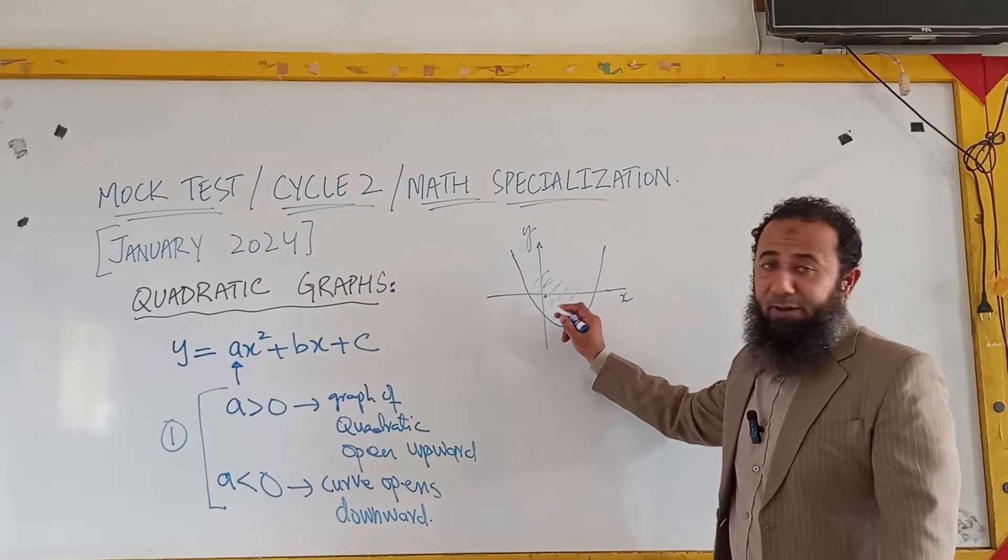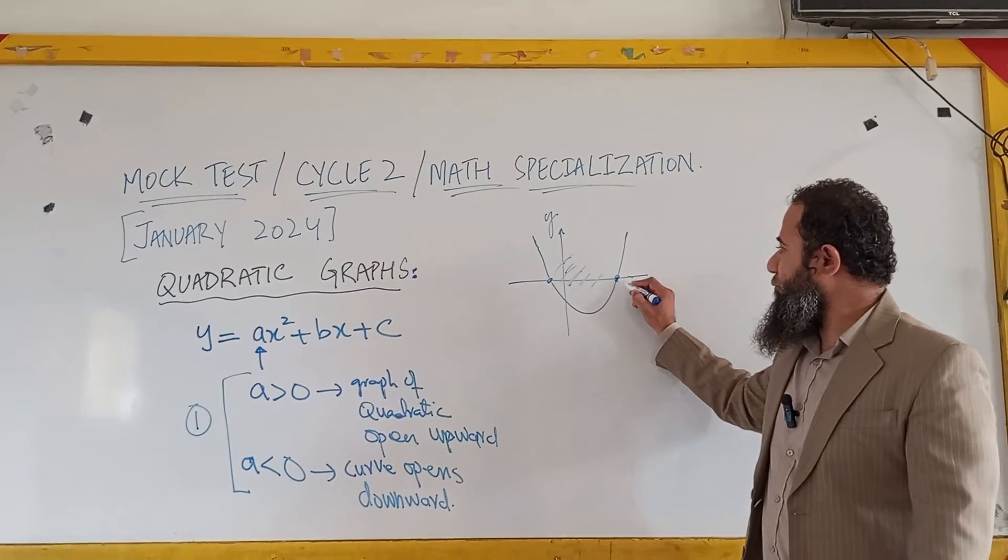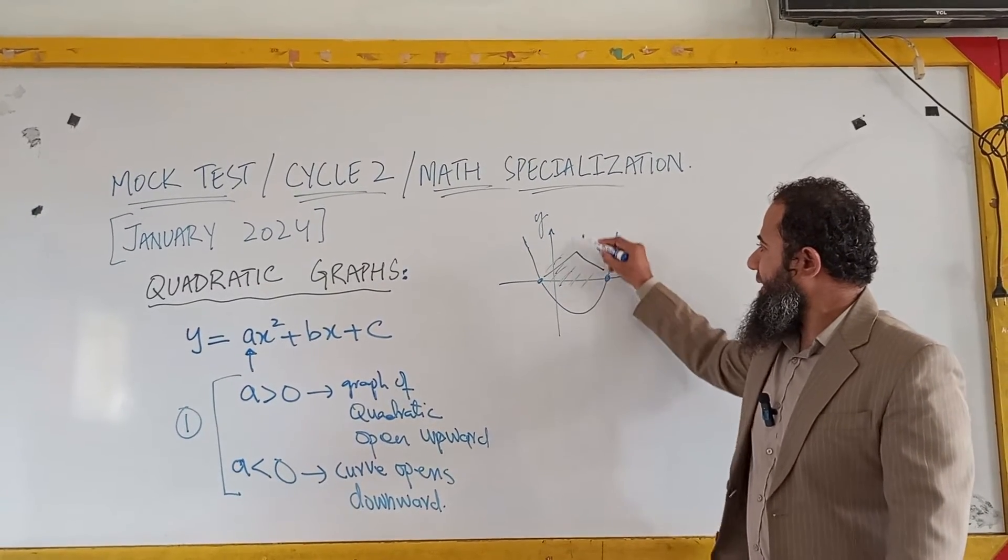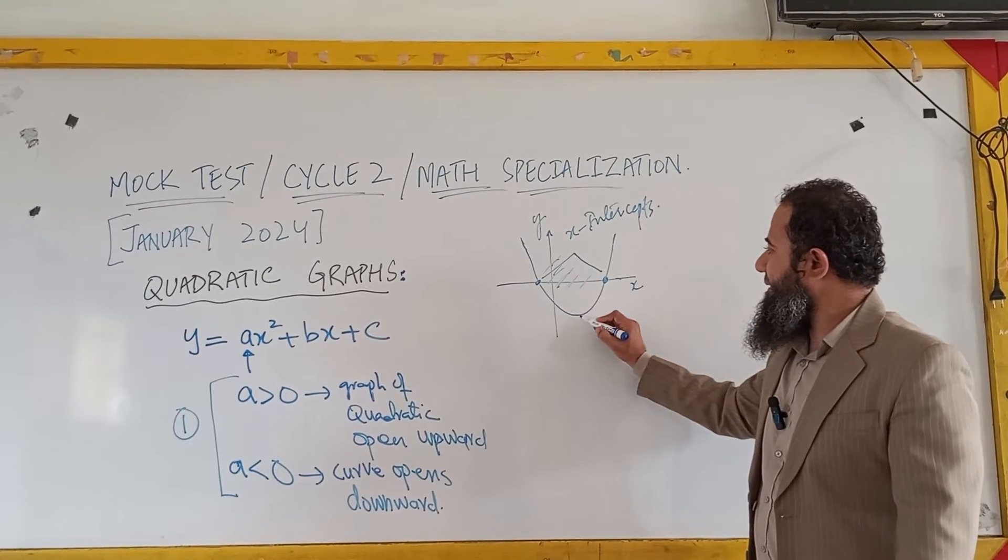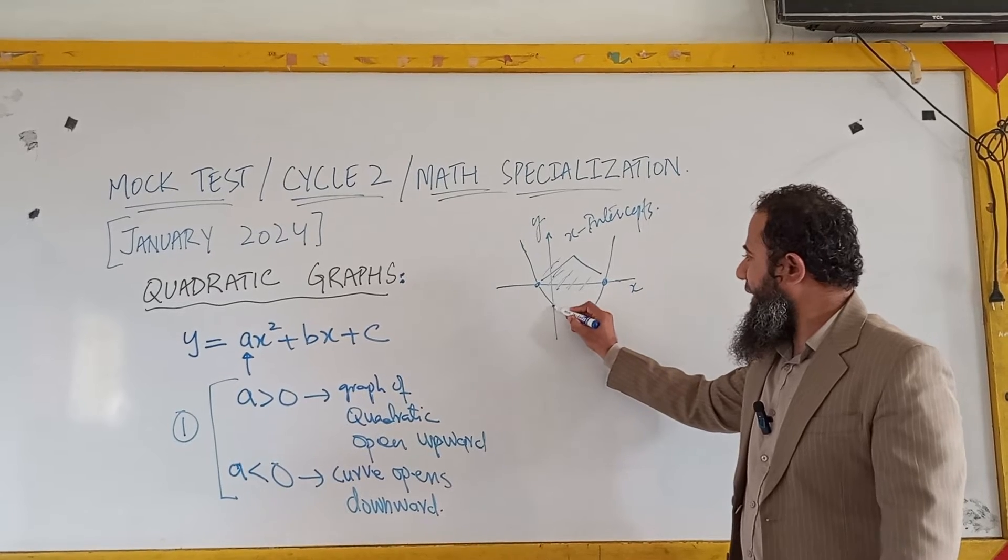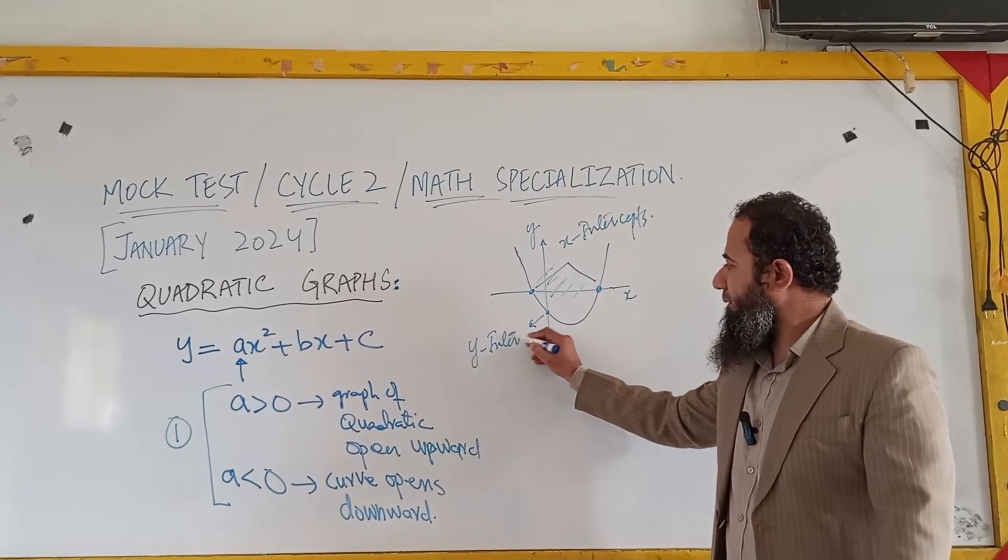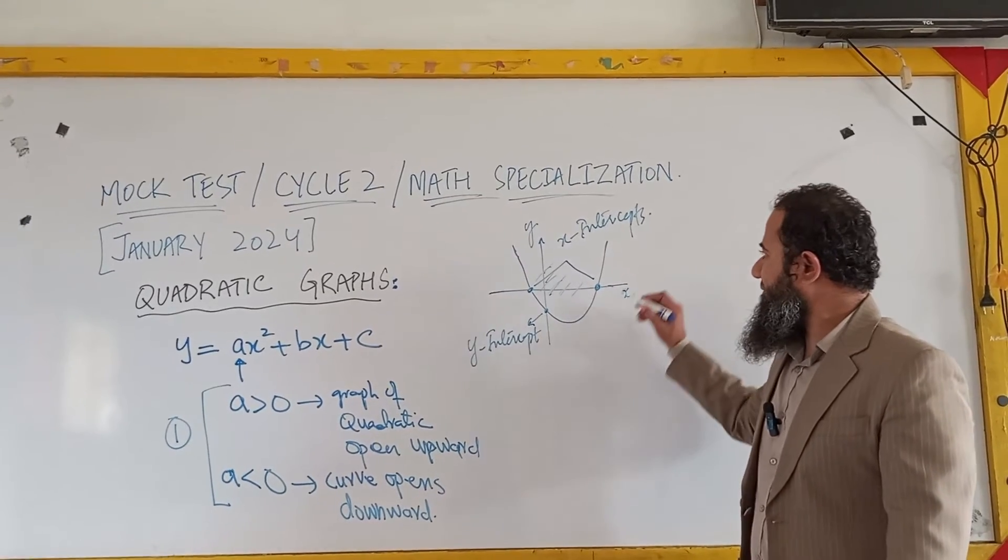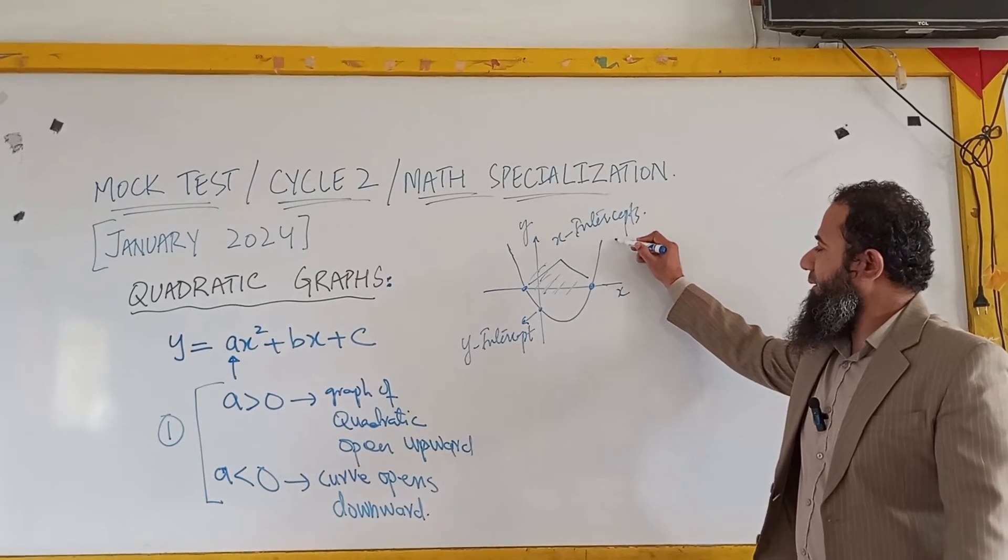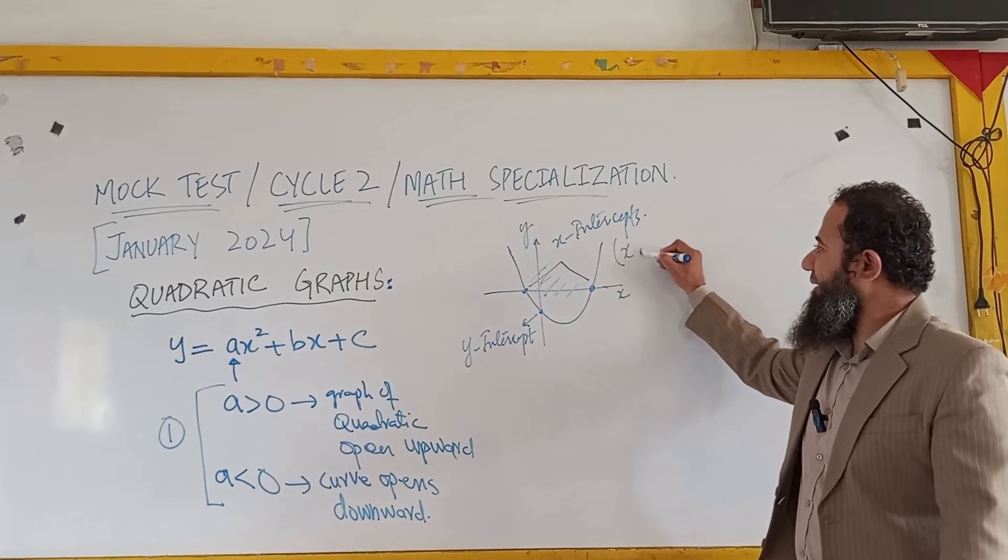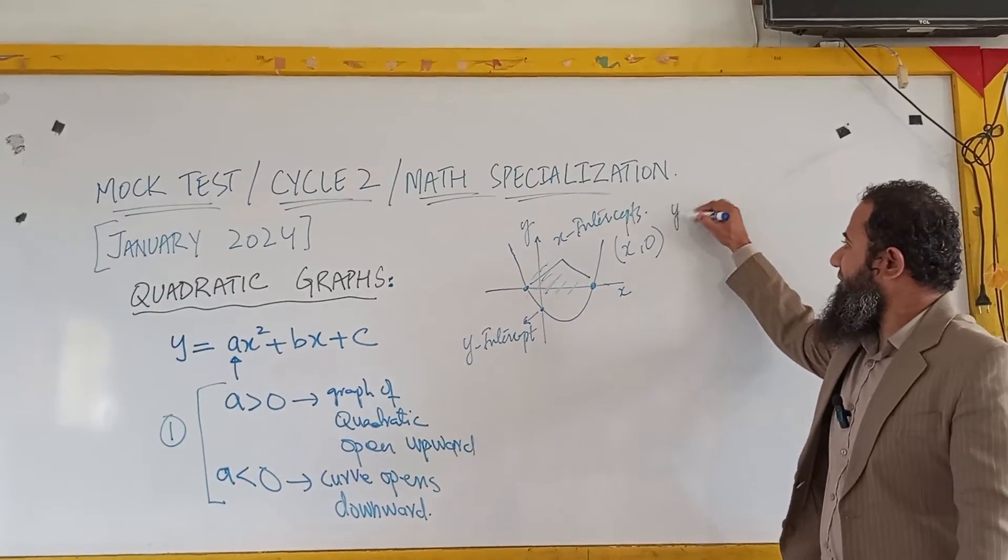Now we have a few important points in this. These two points are called the x-intercepts, and this point is called the y-intercept of the curve. You know that on the x-intercept, the coordinate is always x comma zero, because on the x-axis we have y.